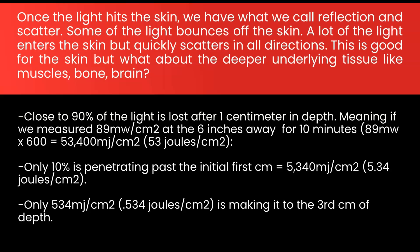Once the light hits the skin, we have what we call reflection and scatter. Some of the light bounces off the skin, which is what we see. A lot of the light enters the skin, but quickly scatters in all directions. This is good for the skin, but what about the deeper underlying tissue like muscles, bone, and brain? What we know is close to 90% of the light is lost after the very first centimeter of depth.